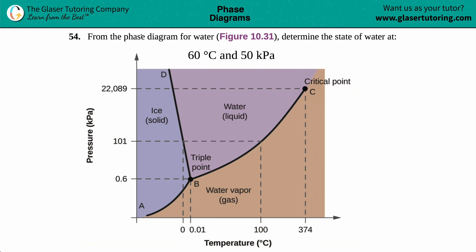Number 54 from the phase diagram for water, which is this little diagram right here, figure 10.31: determine the state of water at 60 degrees Celsius and 50 kilopascals. Okay, so this might look like a little bit of a weird graph, but I promise you it's very easy to understand. Now the first thing is, look at your x and y coordinates.